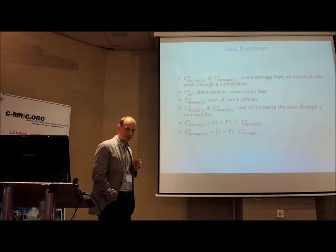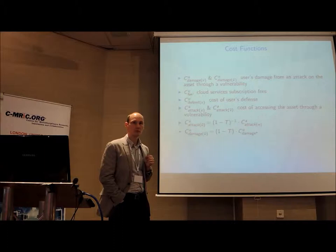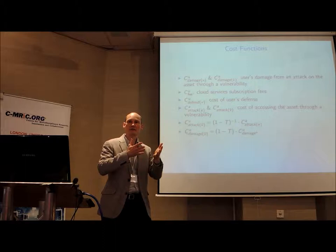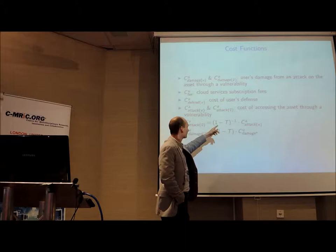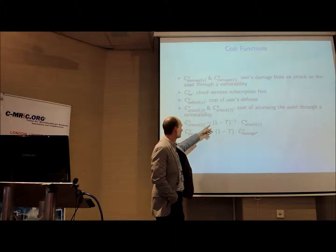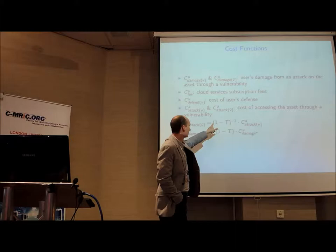When I say C subscript A superscript A, this is the cost an attacker would have if they attack the cloud. So what we're saying is we can't really compute this. We don't know how safe the cloud is and that's obviously exactly the problem. So what we're assuming here is let us introduce the trust we have in the cloud as a parameter.